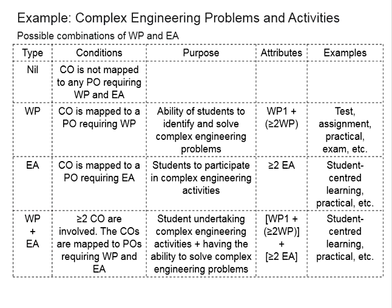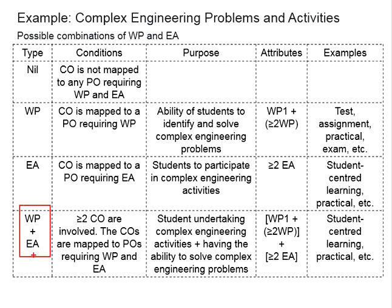Now, what are the circumstances making both come together? This happens when your teaching and learning activities and also the assessment are dealing with more than one course outcomes. When you have two or more course outcomes — one course outcome with WP, another with EA — and when you design the teaching and learning activities, you will have both coming together.